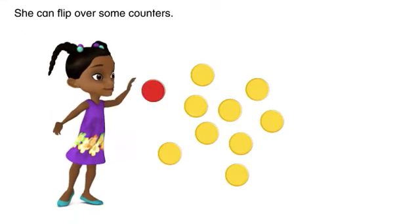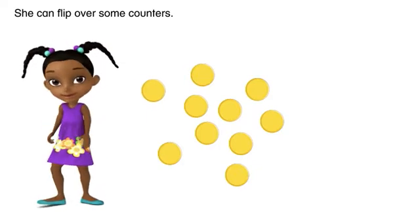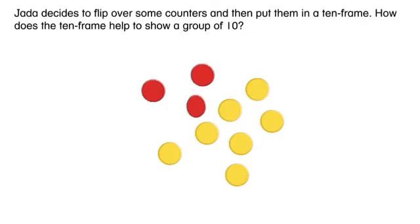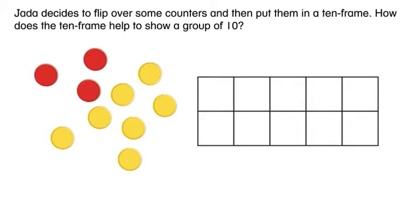She can flip over some counters. Jada decides to flip over some counters and then put them in a ten-frame. How does the ten-frame help to show a group of ten?